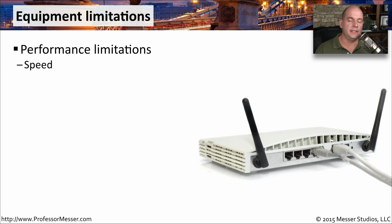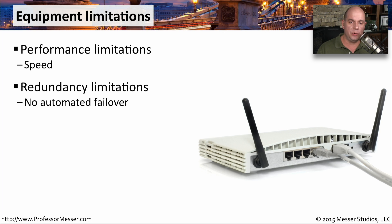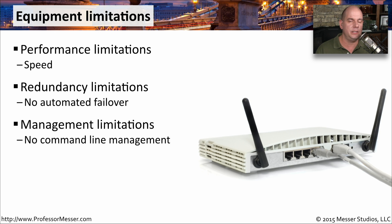These smaller offices have functional equipment, but you will run into limitations. Ethernet devices are generally set up to run at gigabit speeds, but may not be as fast as an enterprise ethernet switch. You also have redundancy limitations — there may not be multiple servers, switches, or routers, so there's no way to automate a failover if there's a problem. You also have to think about how to manage all these devices remotely, since you're not on site 24 hours a day, and you need a way to monitor all the different components.